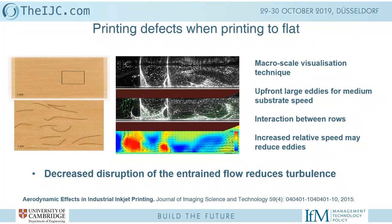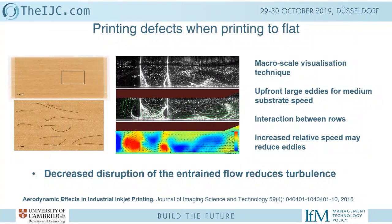That led us to think that decreasing the disruption of what I will call the entrained flow — the flow generated when moving a substrate — would reduce turbulence and that should be the way to go. So the substrate moves left to right, generating that kind of flow pattern in that direction.